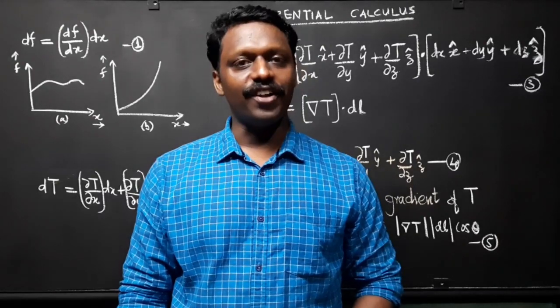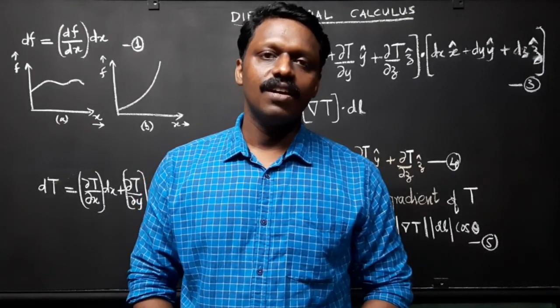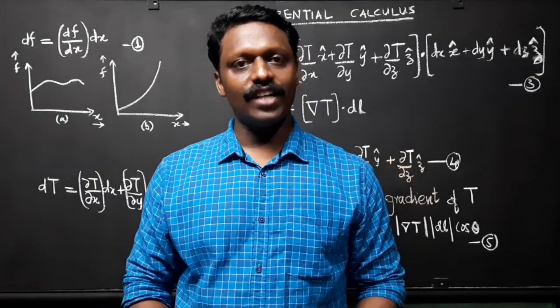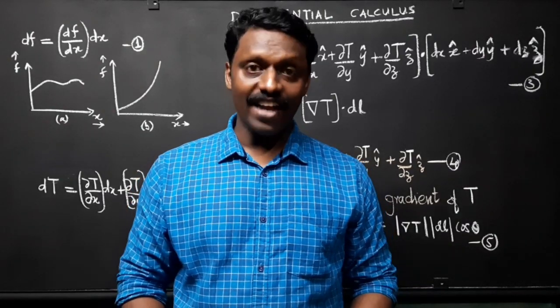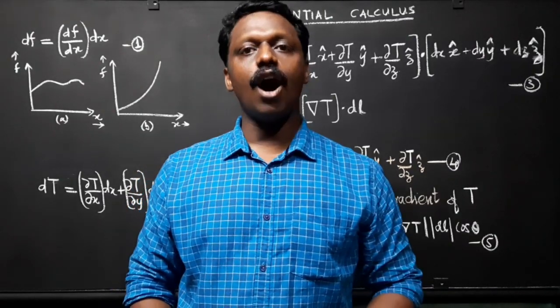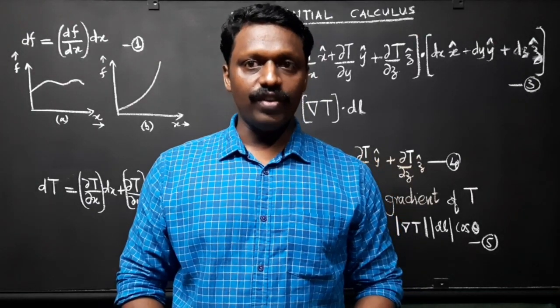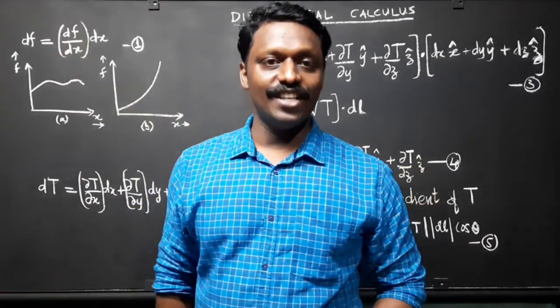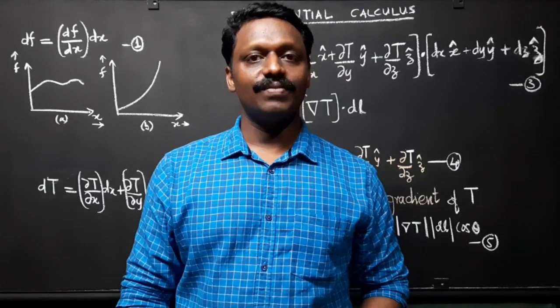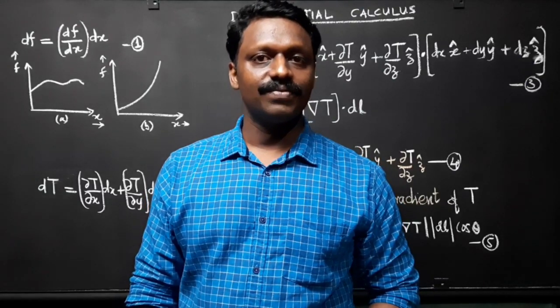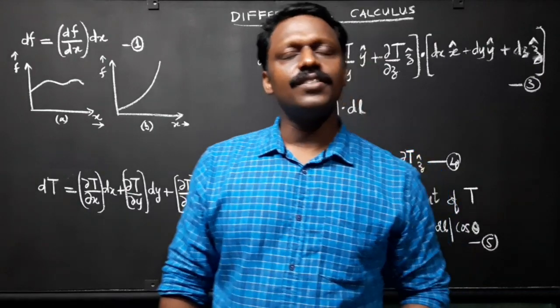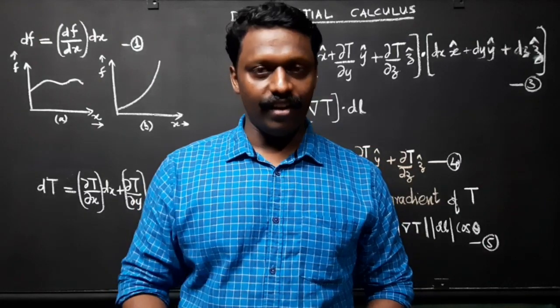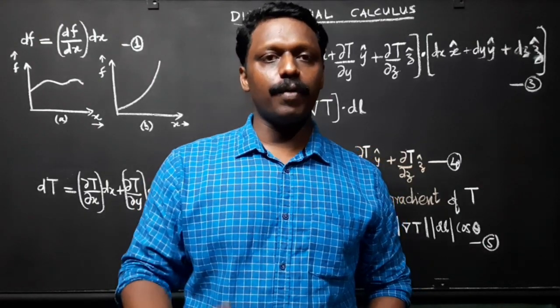First, ordinary derivatives. Suppose we have a function of one variable f. What does the derivative df/dx do for us? It tells us how rapidly the function f varies when we change the argument x by a tiny amount dx. df equals (df/dx)dx, which is equation 1. In words, if we change x by an amount dx, then f changes by an amount df. The derivative is the proportionality factor.